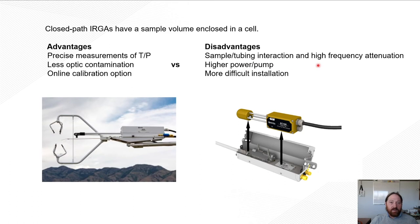So some disadvantages of that closed path is that it doesn't have as high of a frequency response as our open path. So the sample tubing and sample in tubing interaction and high frequency attenuation is a real concern. So as the air is going down that tubing, there's interaction with the walls that cause increased lag time from when the measurement was first brought into the inlet and when it is actually being analyzed by the analyzer.